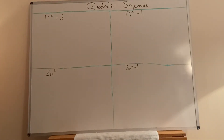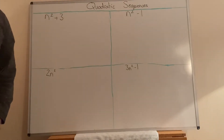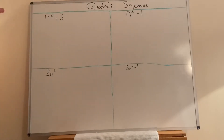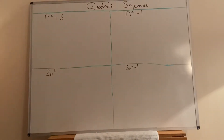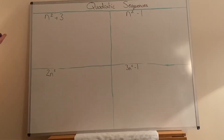Welcome back guys. Last week we were looking at linear sequences — we were looking at generating terms and we were looking at finding the nth term of a sequence. Today though, we're going to move on to quadratic sequences, and basically we're going to do the same thing as what we did last week, but we're going to do it slightly differently.